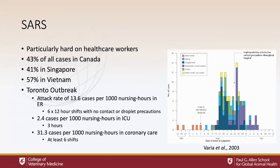We can see how this occurred based on attack rates in different hospital units and how much time was spent without contact or droplet precautions. Within the ER, there was an estimated attack rate of 13.6 cases per 1,000 nursing hours, largely because there were six 12-hour shifts with no precautions in place. By contrast, the ICU had a much lower attack rate of 2.4 cases per 1,000 nursing hours — only a three-hour gap before droplet precautions were recognized. In a coronary care unit, the attack rate was 31.3 cases per 1,000 nursing hours, because there were at least eight 12-hour shifts before appropriate infection control measures were taken.